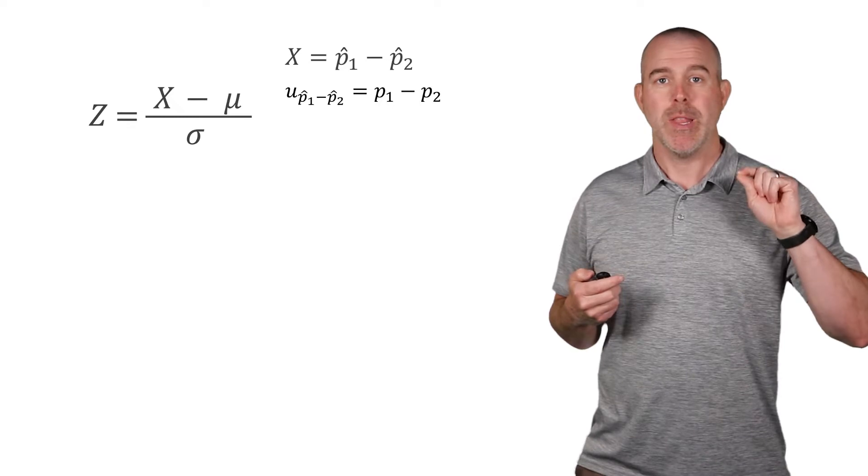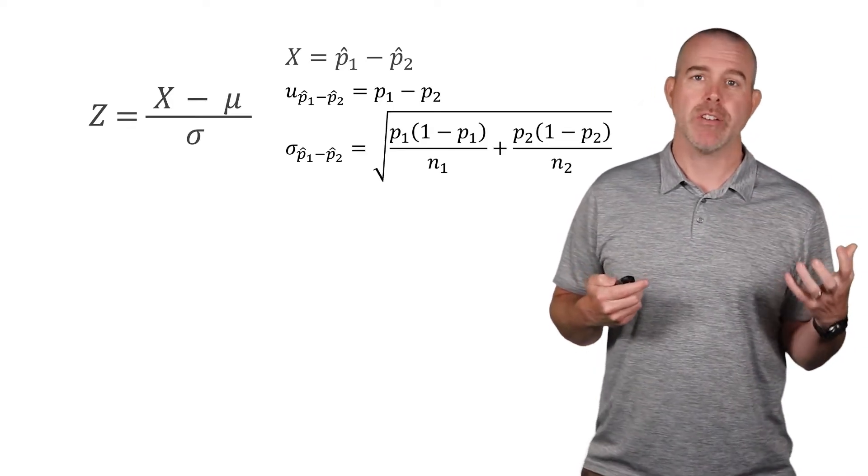Now you remember our old friend, the Z score, X minus mu over sigma. Well, in this case, our X, the variable we're interested in, is the P1 hat minus P2 hat. The mean of that would be the difference between the population proportions and then we have our standard deviation.